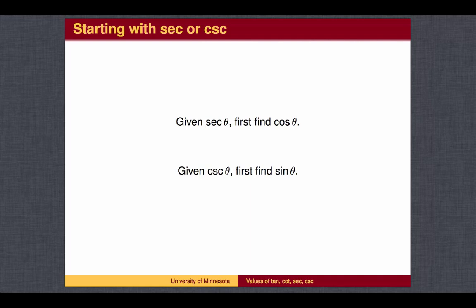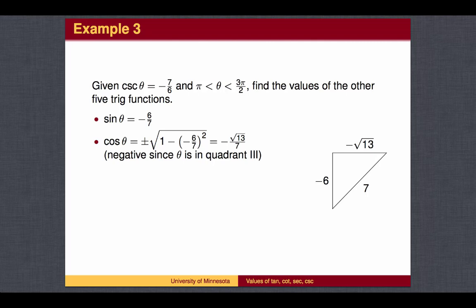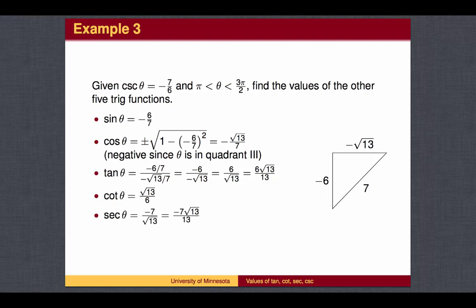If you are given either secant or cosecant, first take the reciprocal to find the sine or cosine, and then follow the standard procedure. Here is an example. We are given the cosecant value. We can first find the sine value by taking the reciprocal. We next find the cosine value by using the trig version of the Pythagorean Theorem. Note that since the angle is between pi and 3 pi over 2, we are in the third quadrant, and therefore we choose the negative value. Now that we have the values for sine and cosine, we can find the value of tangent, and then take reciprocals to find the value for cotangent and secant.